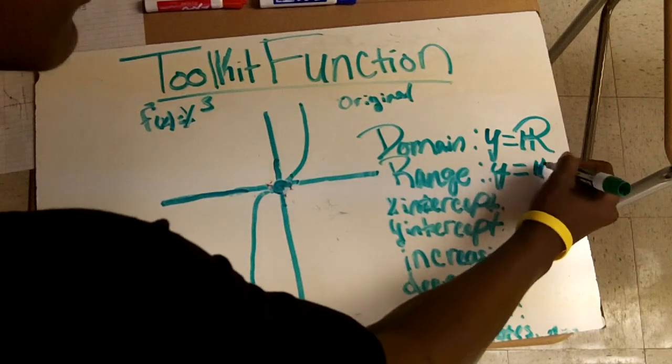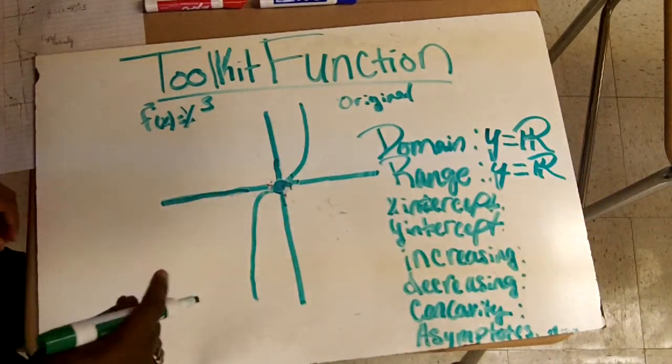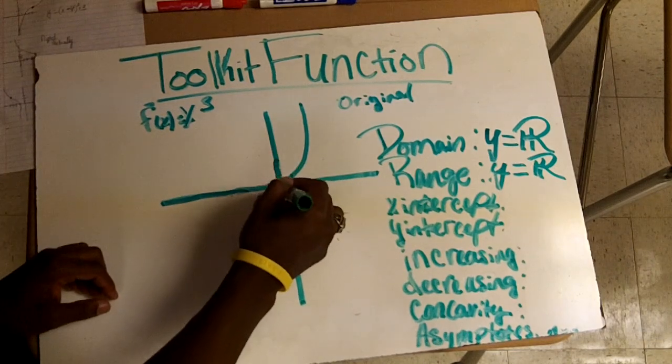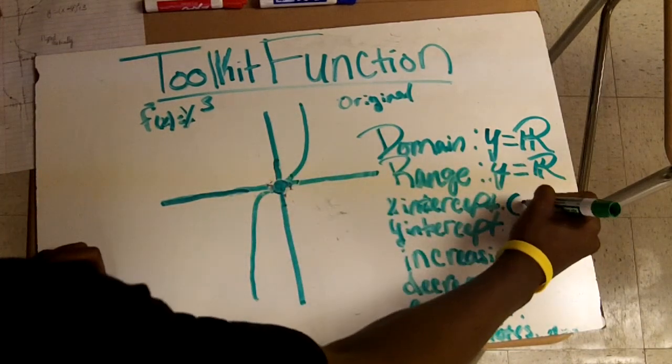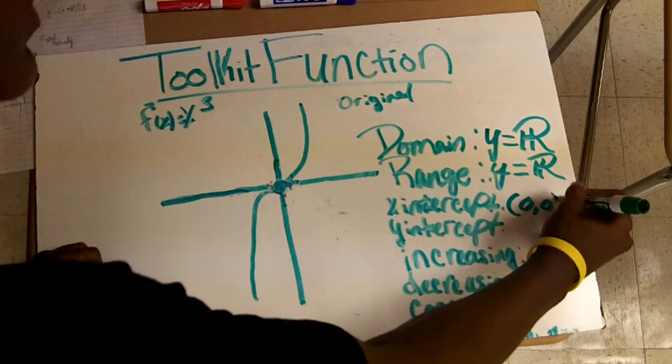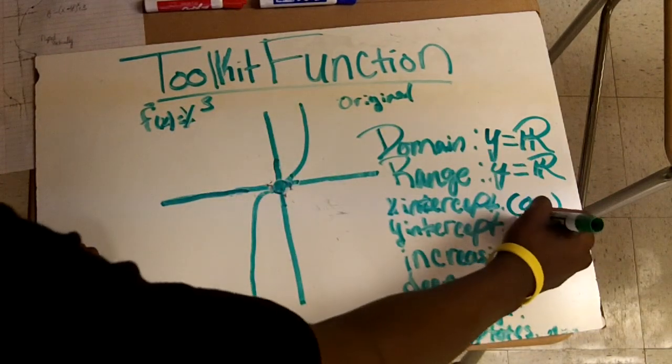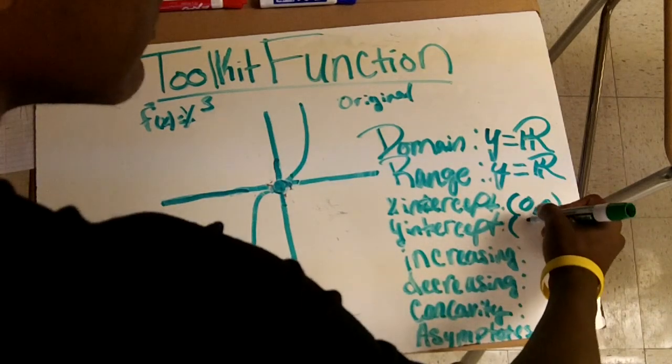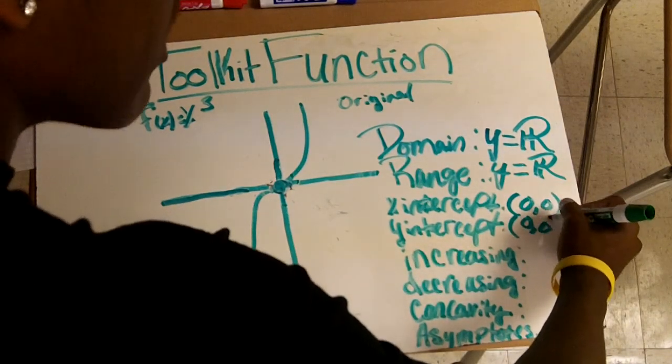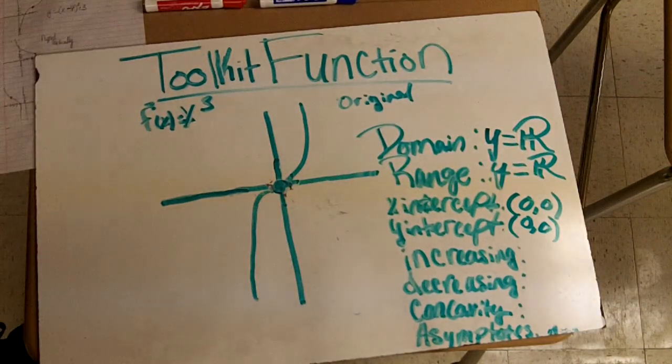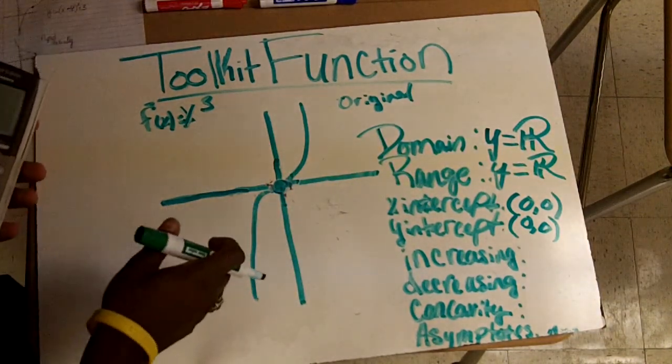Now for your x-intercept, the x-intercept is here at your origin, which is zero comma zero, as well as your y-intercept, that's also zero comma zero.